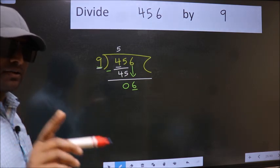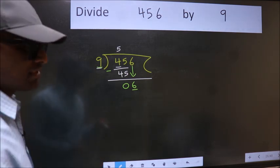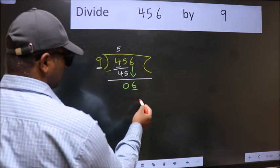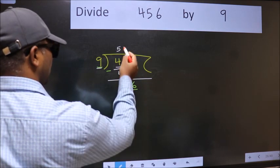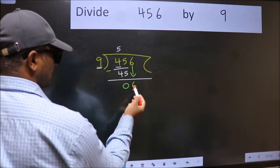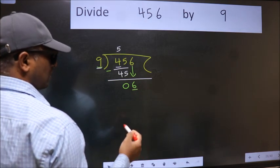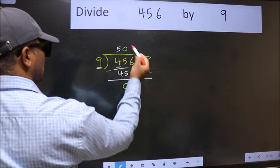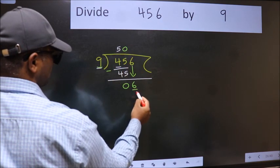Instead of that, what we should think of doing is, which number should we take here? If I take 1, we will get 9, but 9 is larger than 6. So what we do is we take 0. So 9 times 0, 0.